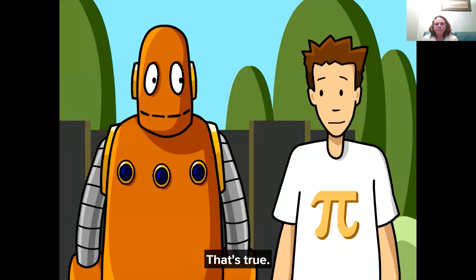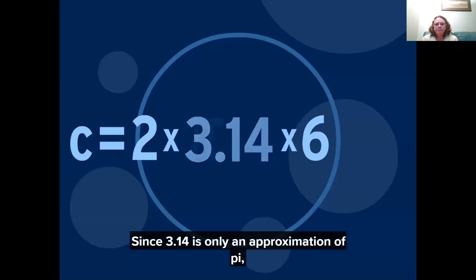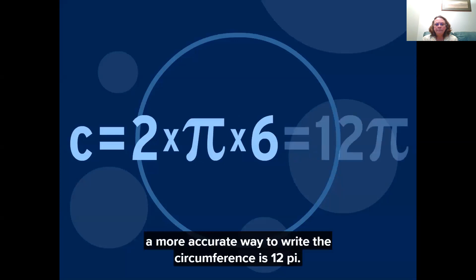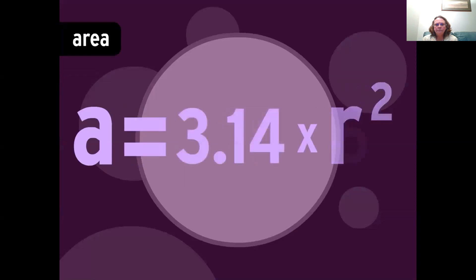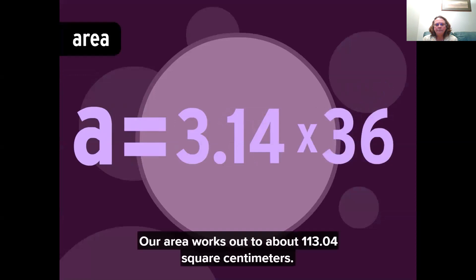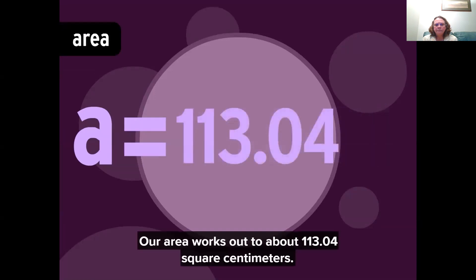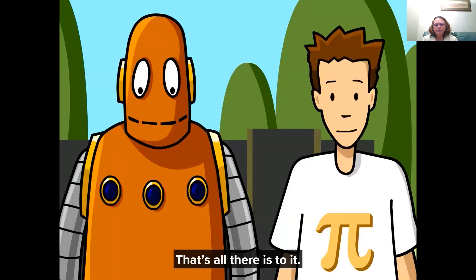That's true. Since 3.14 is only an approximation of Pi a more accurate way to write the circumference is 12 pi. You can get the area of the circle by plugging its radius into the equation a equals pi r squared. 6 squared is 36. Our area works out to be about 113.04 square centimeters. That's all there is to it.